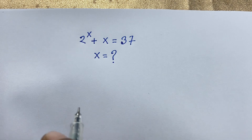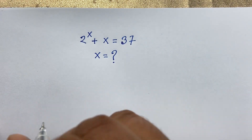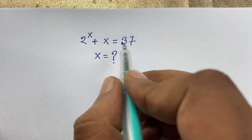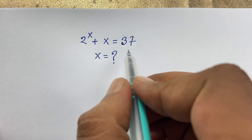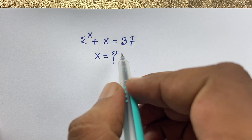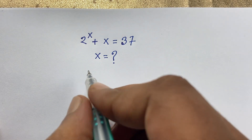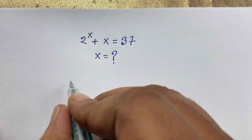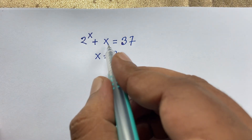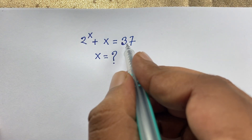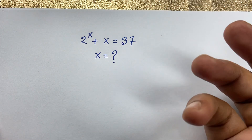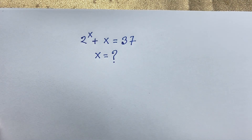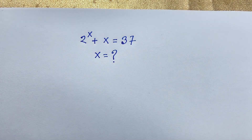First of all, if you think x is equal to 1, so 2 to the power 1 plus 1, it is not equal to 37. So if you think x is equal to 5, you can see easily 2 to the power 5 will be 32, plus 5 will be 37. So the answer is x is equal to 5. But how to solve this exponential equation formally?